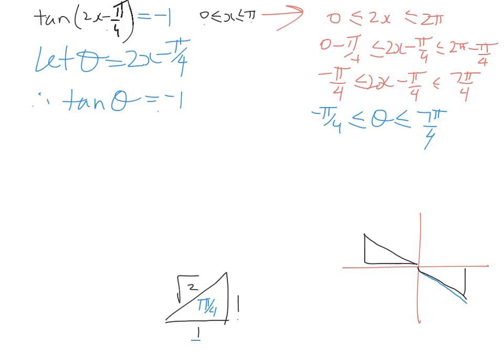So in the second quadrant, we are at, we don't quite go around to π, we stop a little bit short, so we're at 3π/4. So it's π minus π/4, so we're at 3π/4.